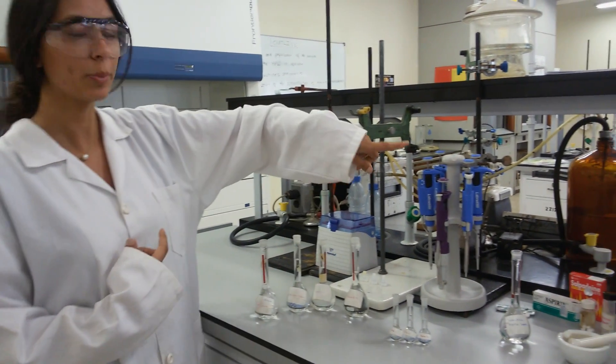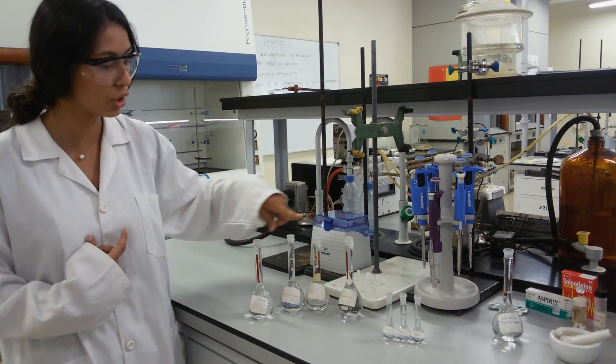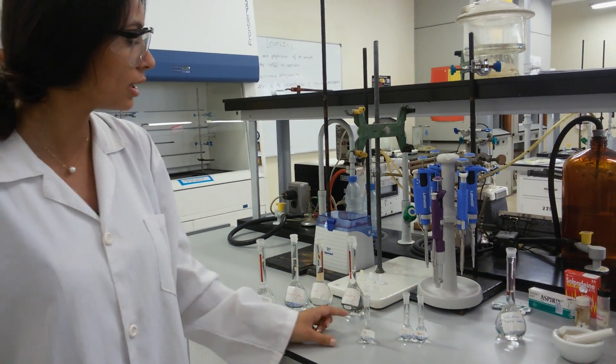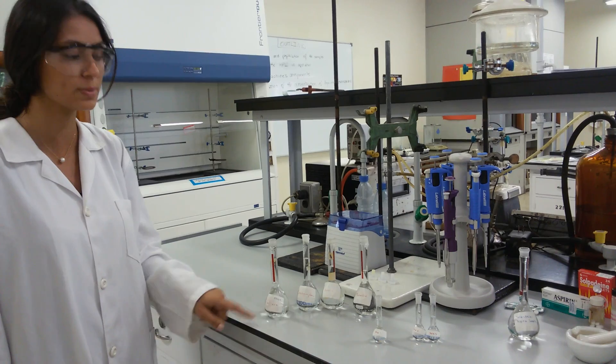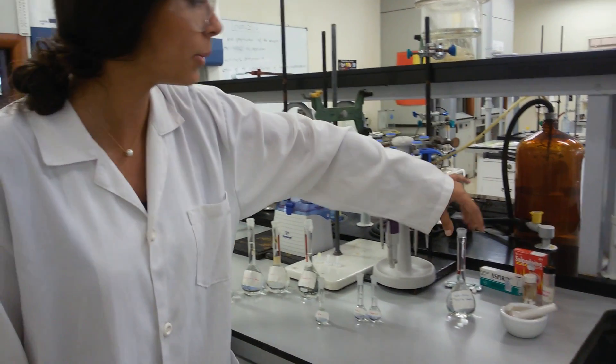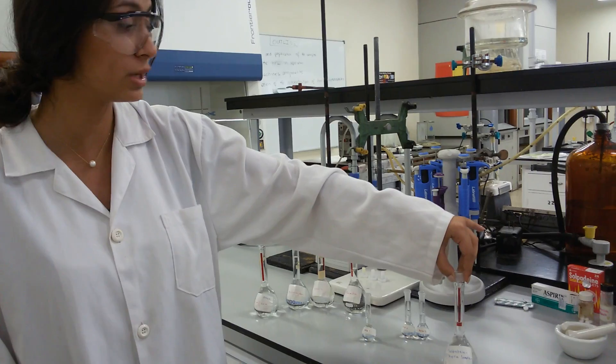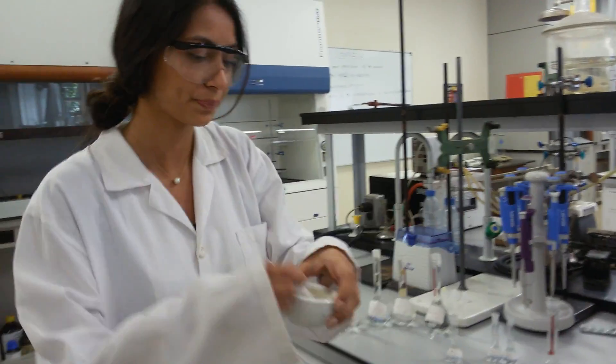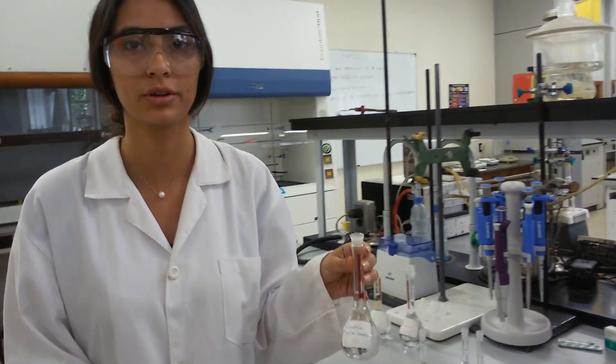Then, using micropipet, we will pipet from each of the stock solutions to prepare three standard solutions containing all of the four active ingredients but at different concentrations. Finally, we will prepare the sulfadain and aspirin solution by grinding the tablets and mixing them with ethanol and water to the line mark.